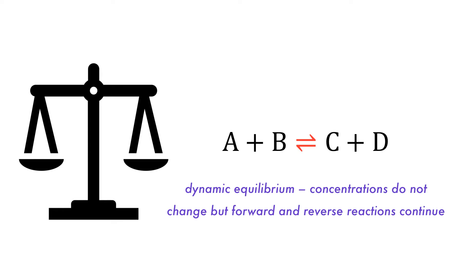When the rate of the forward and reverse reactions are equal, then the system is said to be in dynamic equilibrium, but it is important to realize that chemical reactions are still happening.